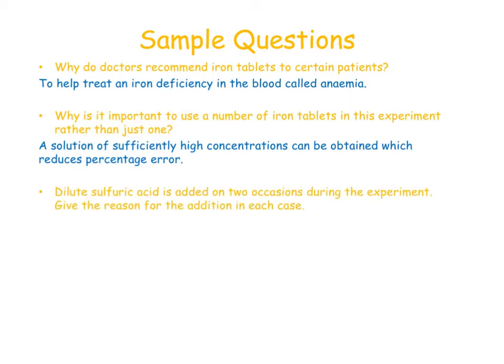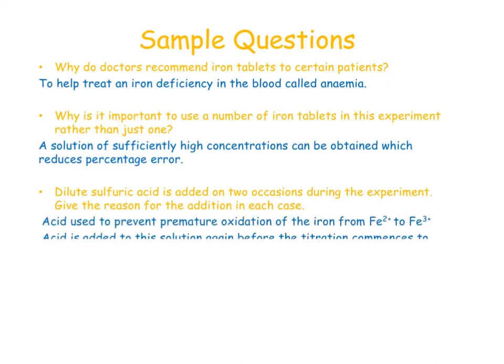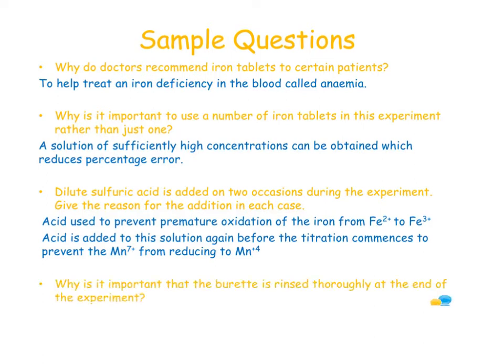Dilute sulfuric acid is added on two occasions — it's used to prevent premature oxidation of iron from Fe2+ to Fe3+, and to prevent premature reduction of Mn+7 to Mn+4. Why is it important that the burette is rinsed thoroughly after this experiment? Because KMnO4 can stain glassware. Why do you read from the top of the meniscus? Because KMnO4 is a heavily dark-colored solution.